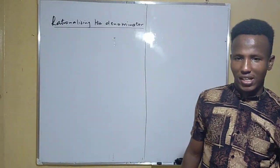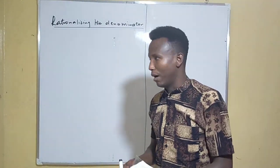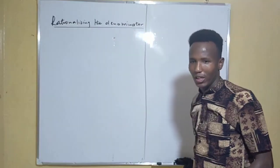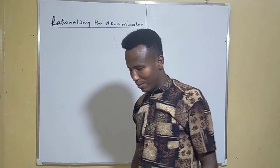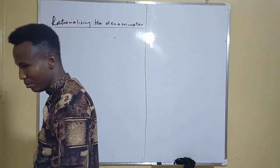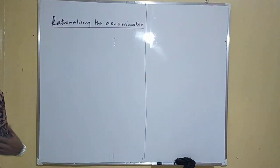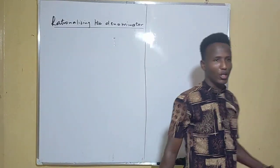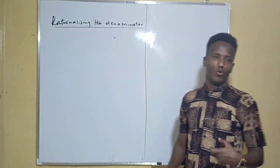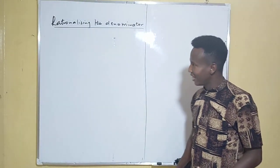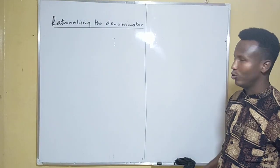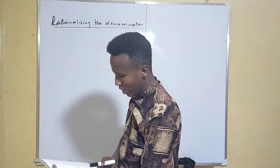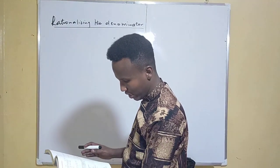Assalamu Alaikum my dear brothers and sisters. Welcome back. This is your brother Abdi Mahamaloum. Today we have what you normally call rationalizing the denominator, which is the second part of mathematics of Form 3 by the name SARS. This part of mathematics will come carrying 3 marks, so you must know from today what SARS questions are and how you're going to solve them.